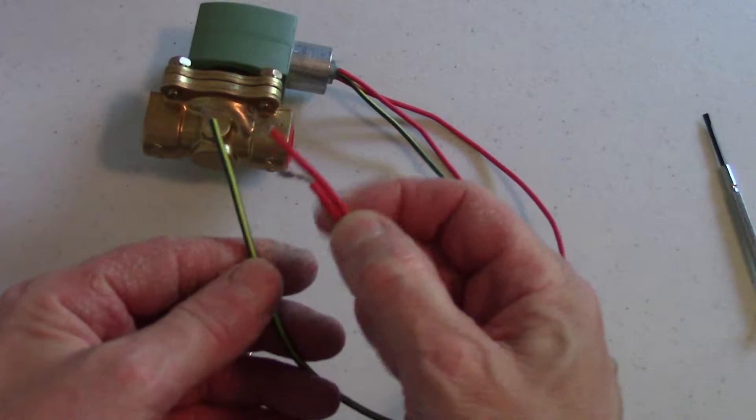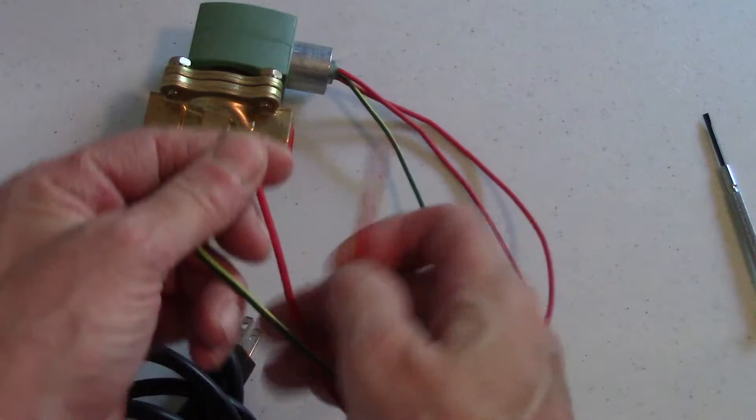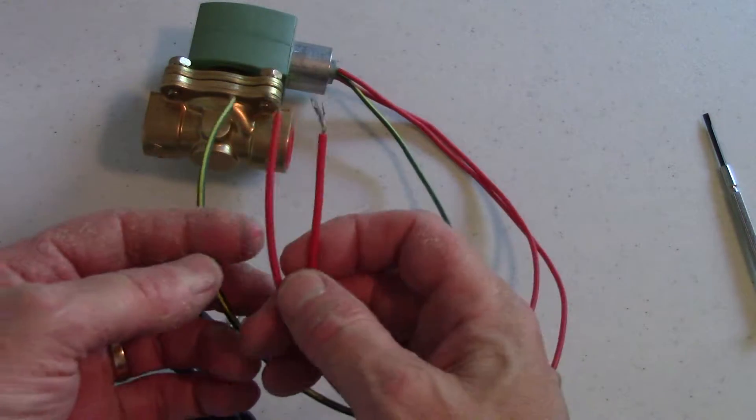The solenoid valve itself has three wires, a ground wire and two signal wires or two power wires.